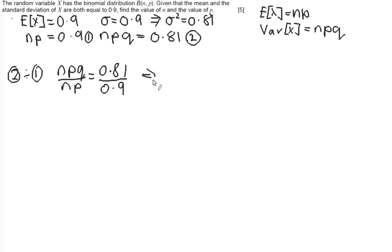The reason I do it this way around is because I then get np's cancel and leave me with q, and then 0.81 divided by 0.9 is 0.9. So what I know now is that q is equal to 0.9.